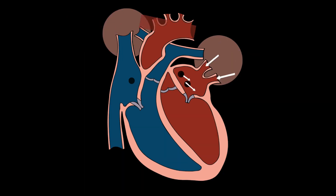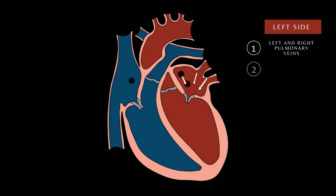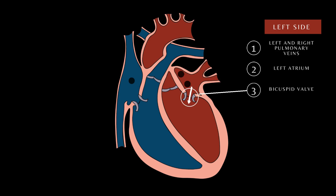Oxygenated blood leaves the pulmonary circulation and re-enters the heart via the left and right pulmonary veins, entering the left atrium. Atrial contraction pushes the blood through the bicuspid valve. Note: the bicuspid valve is open and the aortic valve is closed.